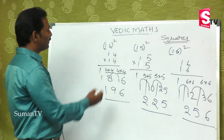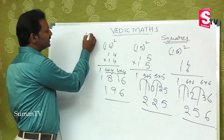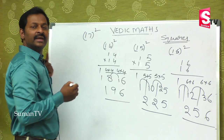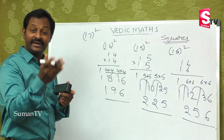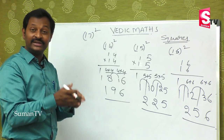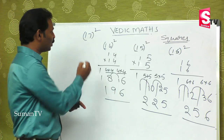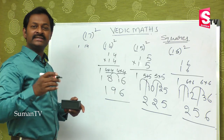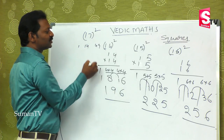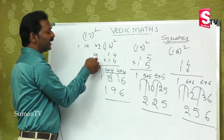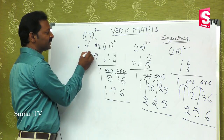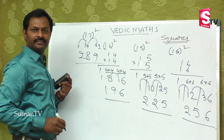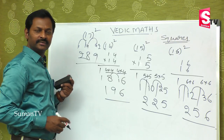For practice, let us do 17 square. First digit is 1. Then 7 plus 7 is 14, and 7 into 7 is 49. Balancing: keep 9, carry 4 and add to 14 giving 18, keep 8, carry 1 and add to 1 giving 2. So the answer is 289.